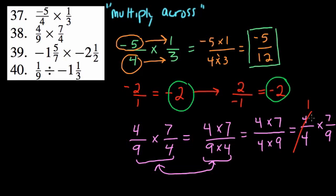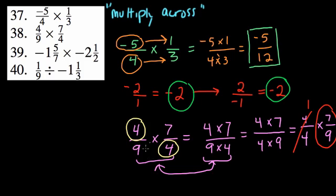We have 4 over 4 times 7 over 9. And 4 over 4 is just 1, so the answer is 7 ninths. What you can realize is that when a numerator and denominator are equal anywhere in the fractions you're multiplying, those cancel out to 1, and whatever is left over is your answer. Here 7 and 9 are left over, so our answer is 7 ninths.